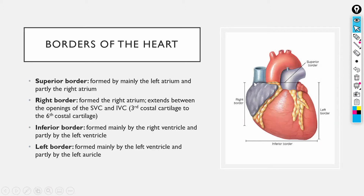Moving on to the borders of the heart: the superior border is formed mainly by the left atrium and partly by the right atrium, though the left atrium is hidden behind the pulmonary trunk and the aorta. The right border is formed by the right atrium, extending between the opening of the superior vena cava and the opening of the inferior vena cava — from the level of the third costal cartilage at the SVC down to the sixth costal cartilage at the IVC.